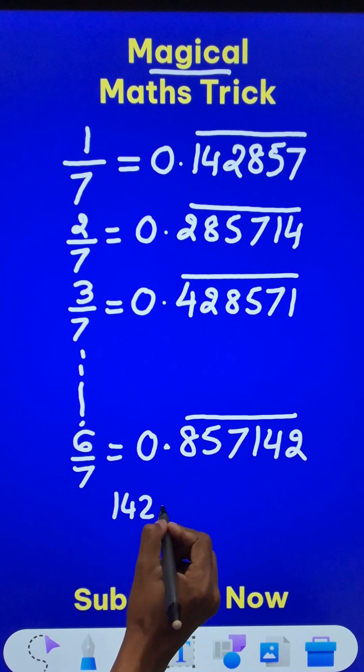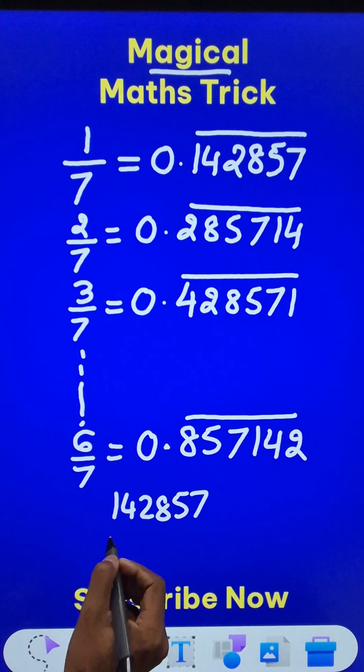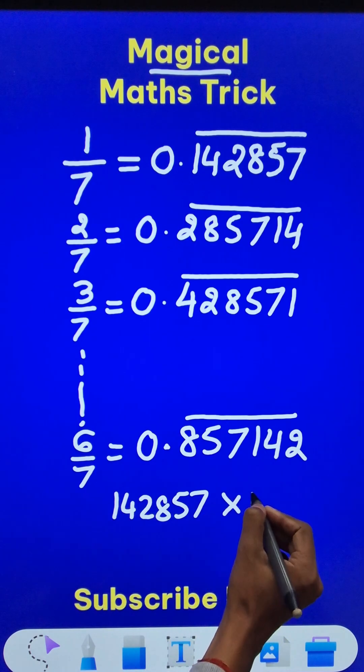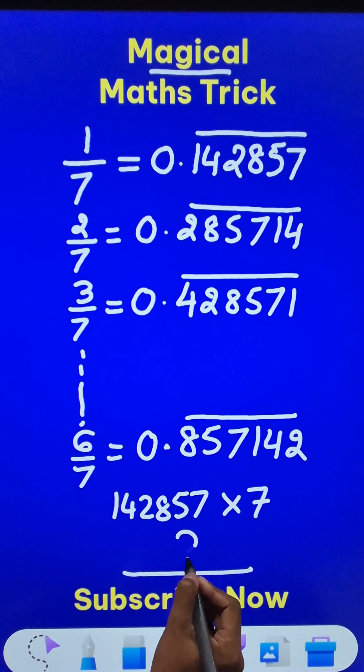This number 142857 is actually magical. Just multiply this number by 7 and tell me in the comments what you obtain.